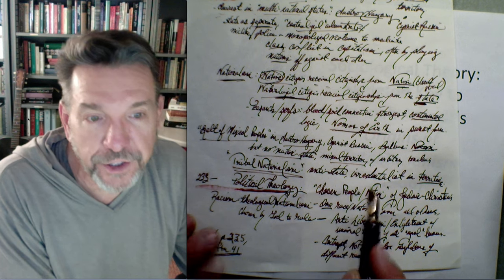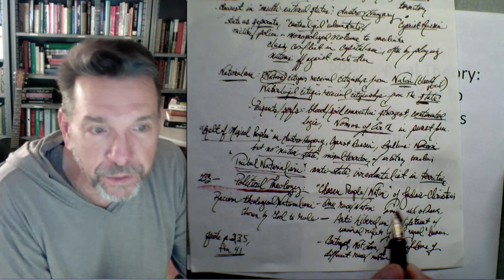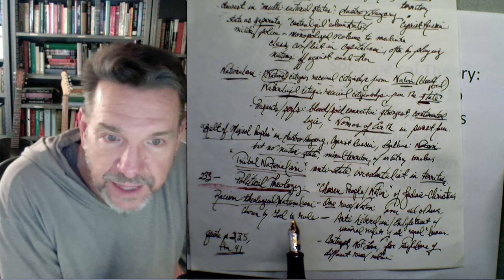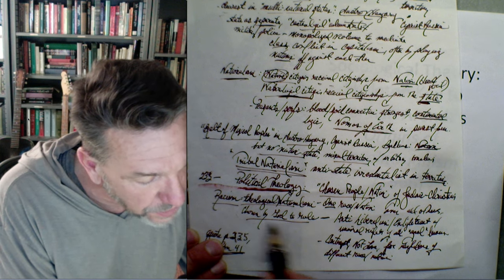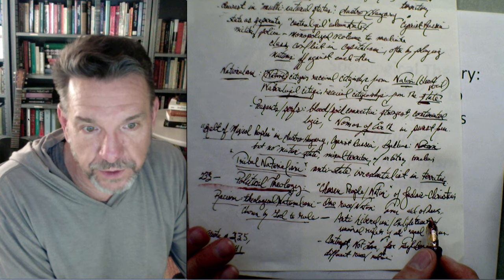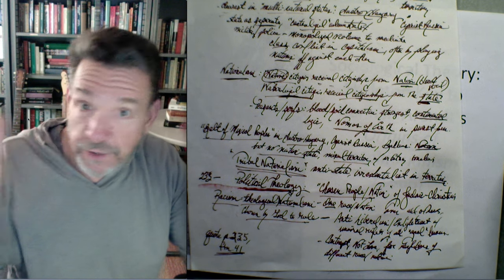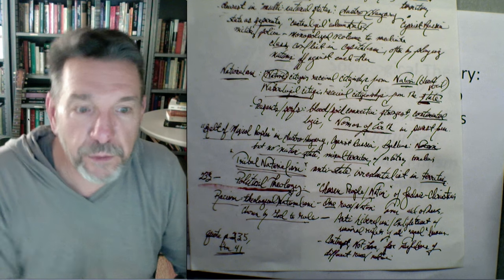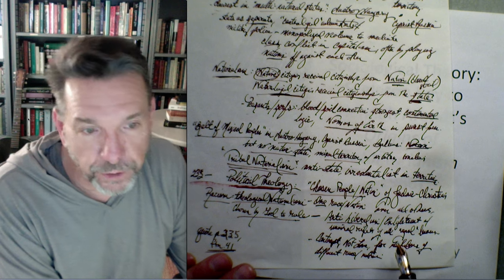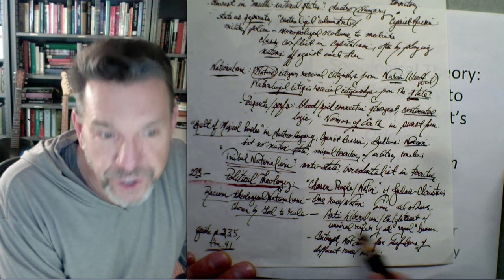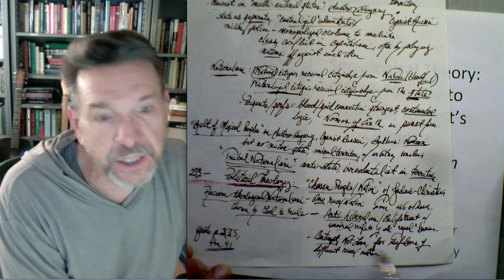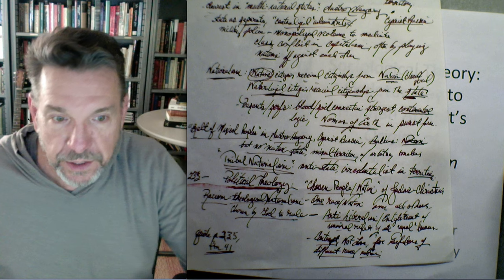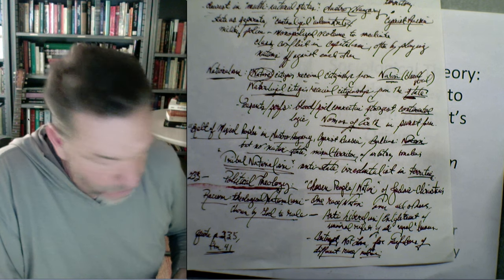On page 233, you get a political theology — a chosen people or a chosen nation in the Judeo-Christian tradition — and racism is often linked to this kind of theological nationalism: one nation, one race chosen by God to rule over all others. In pan-Germanism and pan-Slavism, you're not just trying to reunite the German people to rule themselves, but then you're going to go global. So these are fundamentally anti-liberal, anti-Enlightenment movements, rejecting universal rights and universal equality — they have contempt for these ideas and contempt for neighbors of different race.